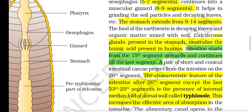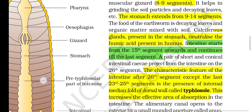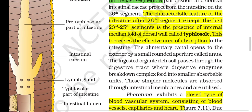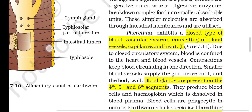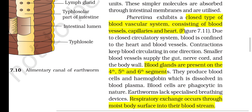A pair of short conical intestinal caeca project from the intestine at the 26th segment. After the 26th segment (except the last 23rd–25th segment), the intestine has an internal median fold of the dorsal wall called typhlosole, which increases the effective area of absorption. The alimentary canal opens to the exterior by a small rounded aperture called anus. Ingested organic-rich soil passes through the digestive tract, where digestive enzymes break down complex food into smaller absorbable units. Pheretima exhibits a closed type of blood vascular system consisting of blood vessels, capillaries and heart; blood is confined to the heart and blood vessels, and contractions keep blood circulating in one direction. Blood glands are present on the 4th, 5th and 6th segments; they produce blood cells and hemoglobin, which is dissolved in blood plasma. Earthworms lack specialized breathing devices; respiratory exchange occurs through the moist body surface.